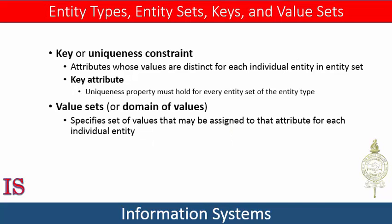Each simple attribute of an entity type is associated with a value set, or domain of values, which specifies the set of values that may be assigned to that attribute for each individual entity. For example, if the range of ages allowed for employees is between 16 and 70, we can specify the value set of the age attribute accordingly. Similarly, we can specify the value set for the name attribute to be a set of strings of alphabetic characters separated by blank characters. Value sets are not displayed in ER diagrams and are typically specified using basic data types such as integer, string, boolean, float, and so on.